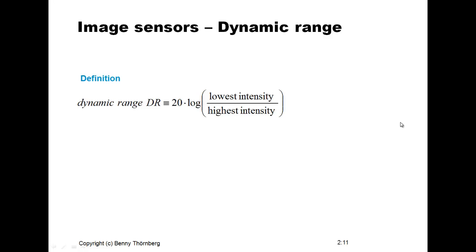That's why we define the dynamic range of a camera as the ratio between the lowest intensity and the highest intensity. We use a logarithmic scale multiplied by a factor of 20, which means we are aiming for a decibel scale — expressing dynamic range in decibels. A typical CMOS or CCD sensor has approximately a dynamic range of about 60 to 65 decibels.